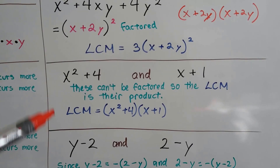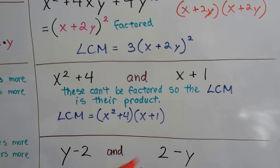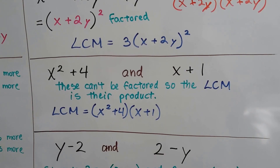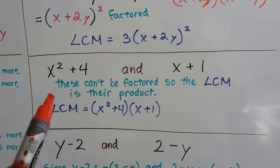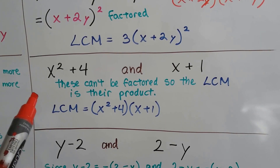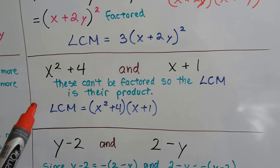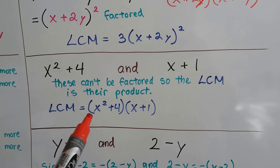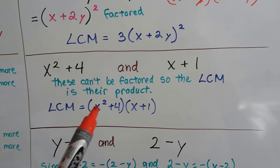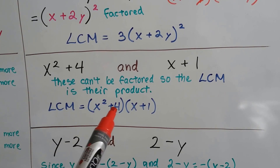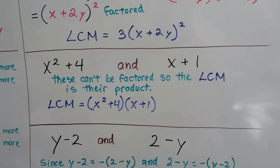Let's try this one: we have x² + 4 and x + 1. These can't be factored, so the least common multiple is their product: (x² + 4)(x + 1).